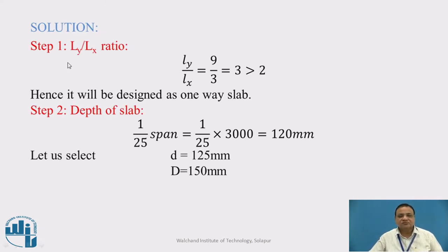Solution. Step 1: Find the ratio of long span to shorter span, L_y by L_x ratio. L_y is 9 meter, L_x is 3 meter, 9 by 3 works out to be 3, which is greater than 2. Hence, it will be designed as one-way slab.